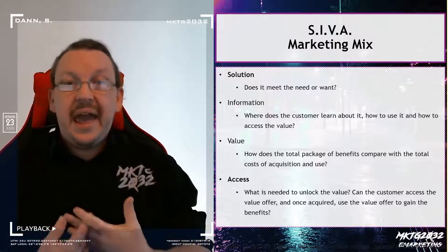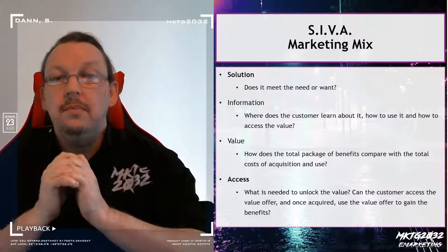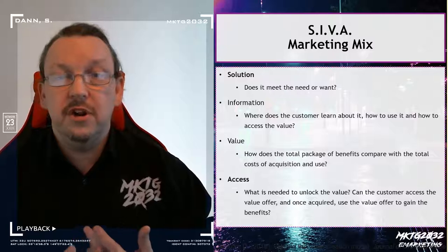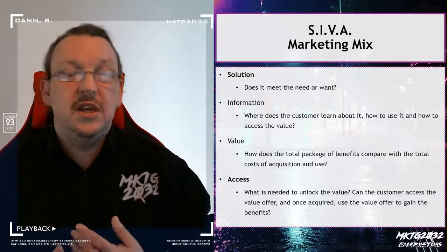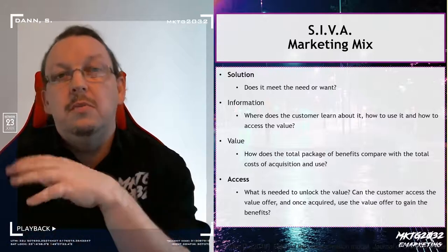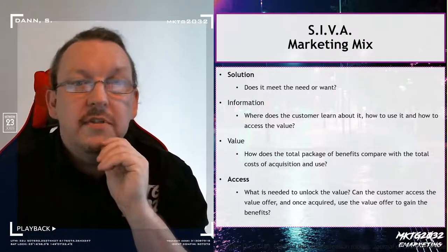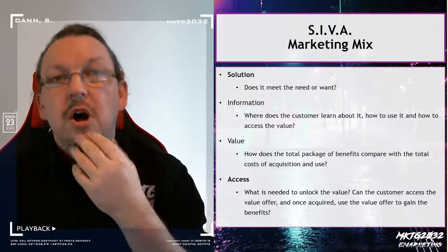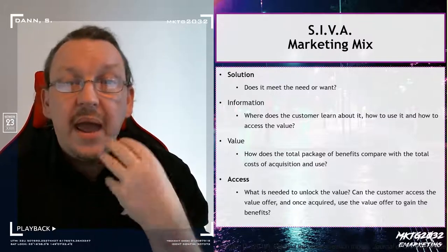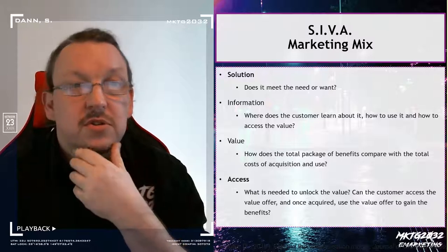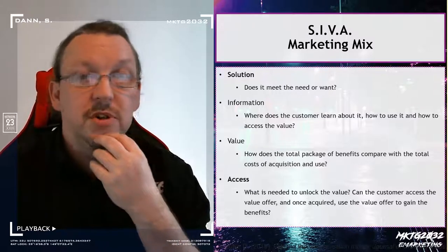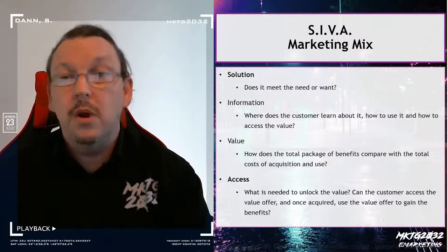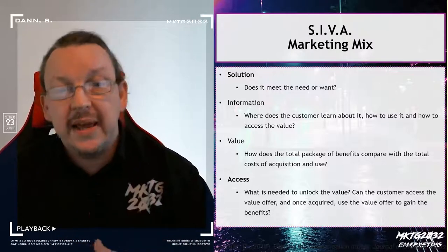And access — can the value offer we've created be reached by our audience? For example, if you're looking at online delivery of goods and services, you've got a niche market you service, you create your own homegrown produce and have it for sale, but you can only ship within 50 kilometers. Access becomes a challenge for anyone outside that range. So SIVA exists as a safety net, and in distribution, solution and access are the dominant two.